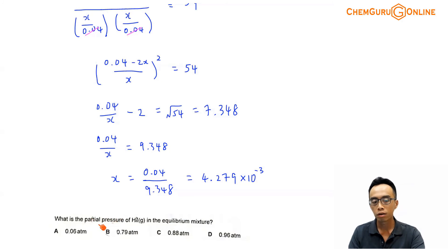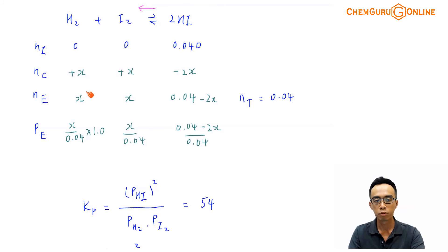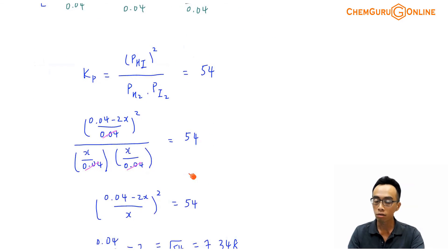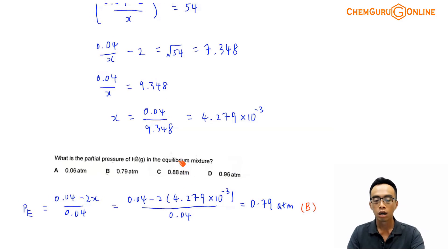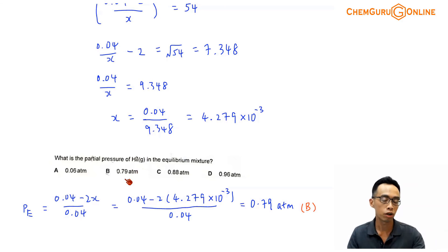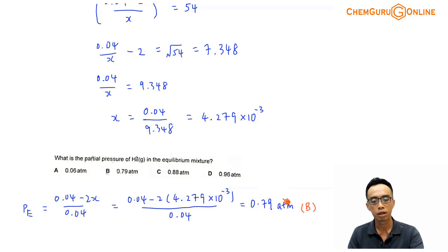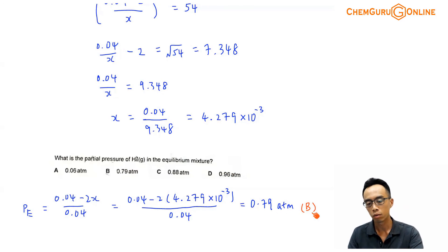Keep in mind the question asks for the partial pressure of HI at equilibrium, and X is not the partial pressure — X is the change in moles of H2 and I2. Substituting X = 4.279 × 10⁻³ into the expression for P(HI): (0.04 − 2X)/0.04. Using a calculator and rounding to two decimal places gives a pressure of 0.79 atmosphere. Looking at options A, B, C, D, the answer is option B.